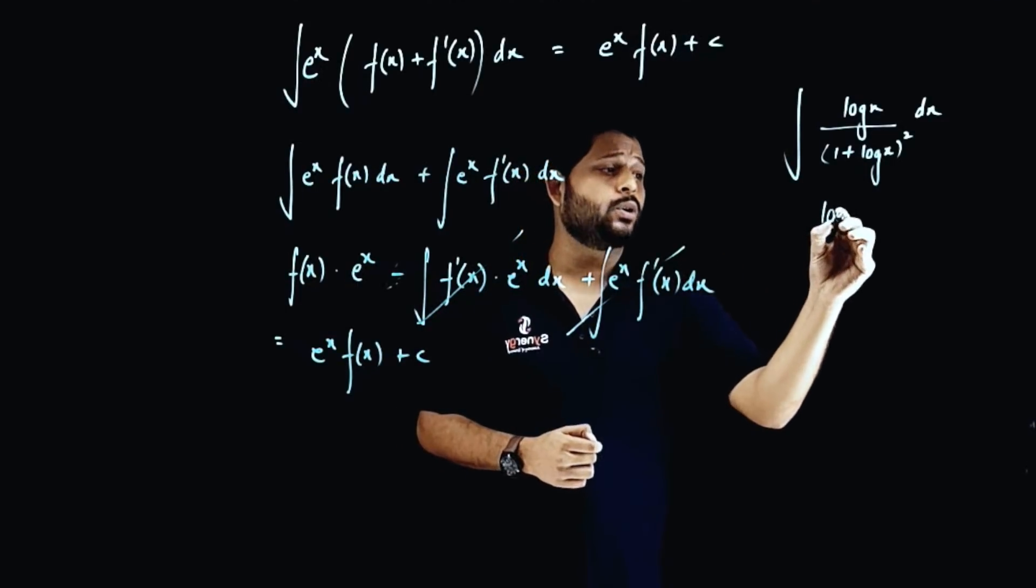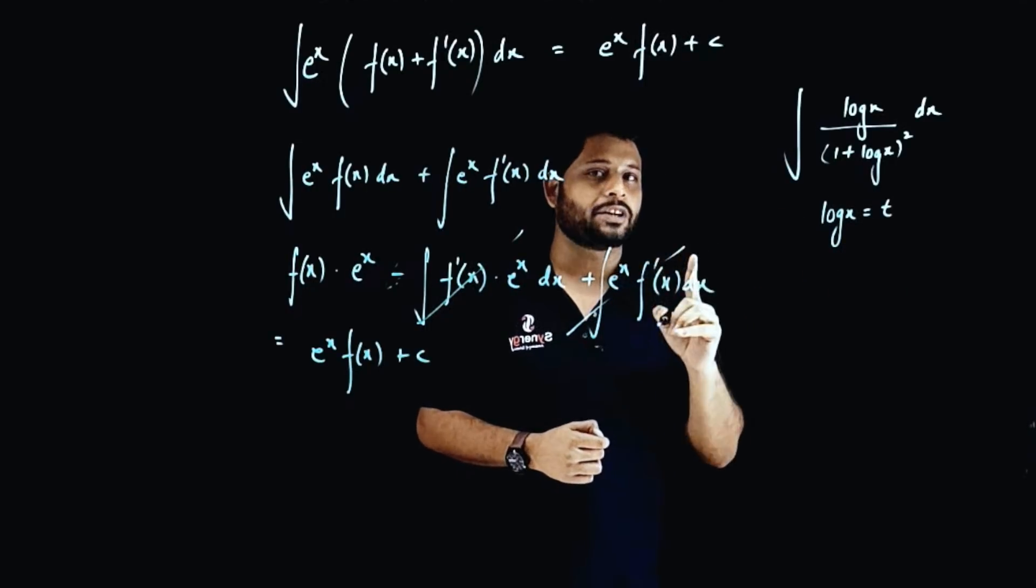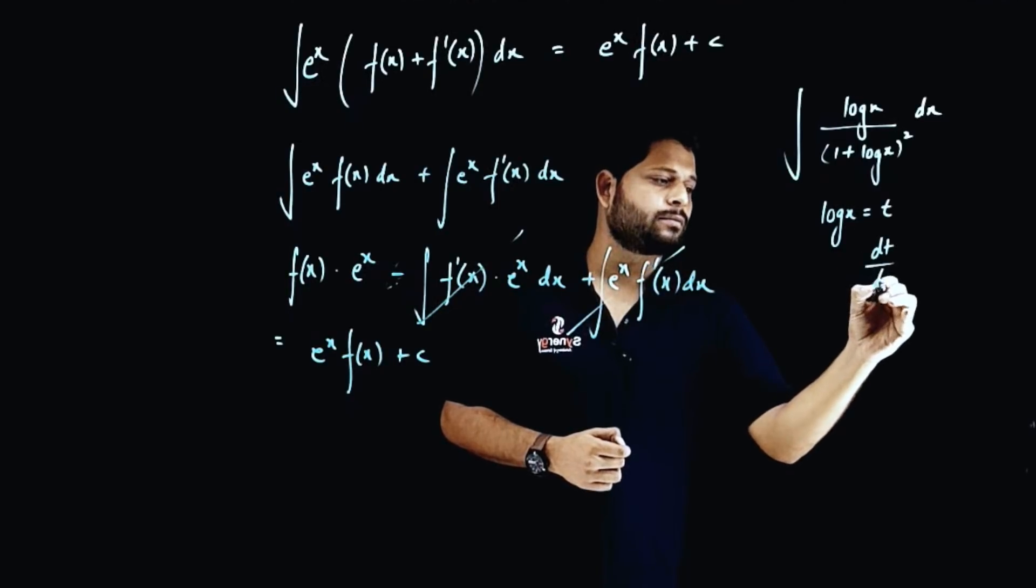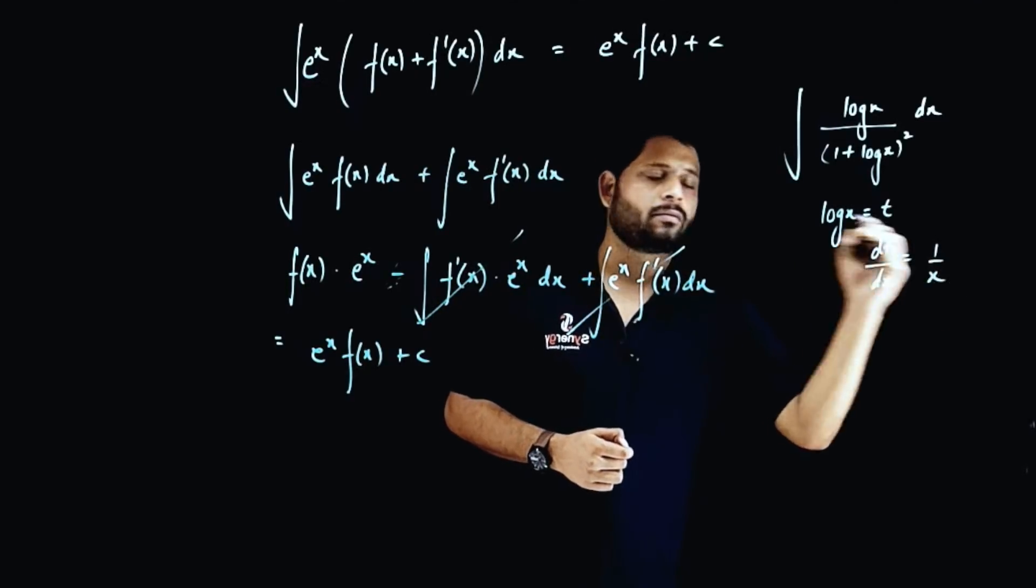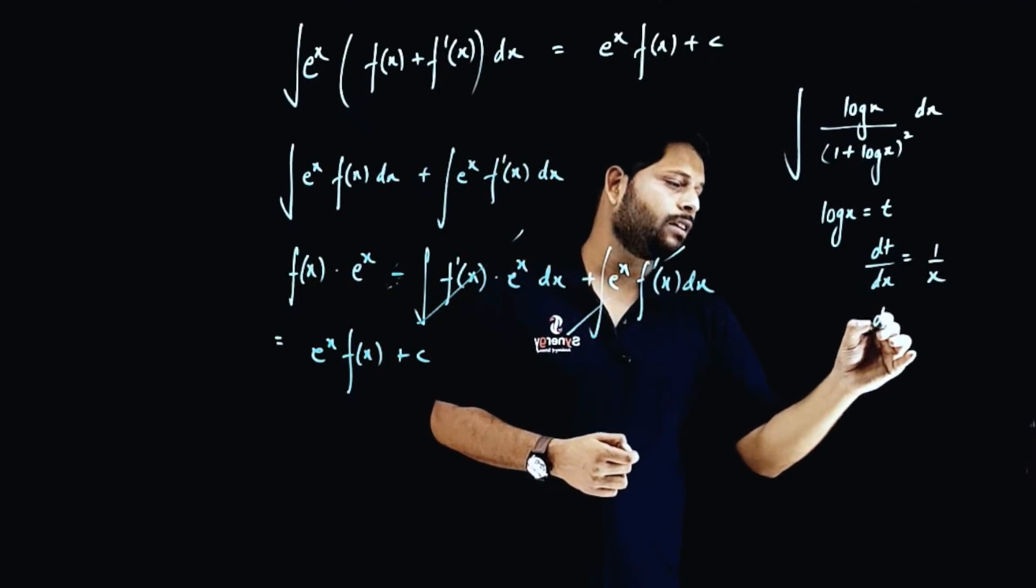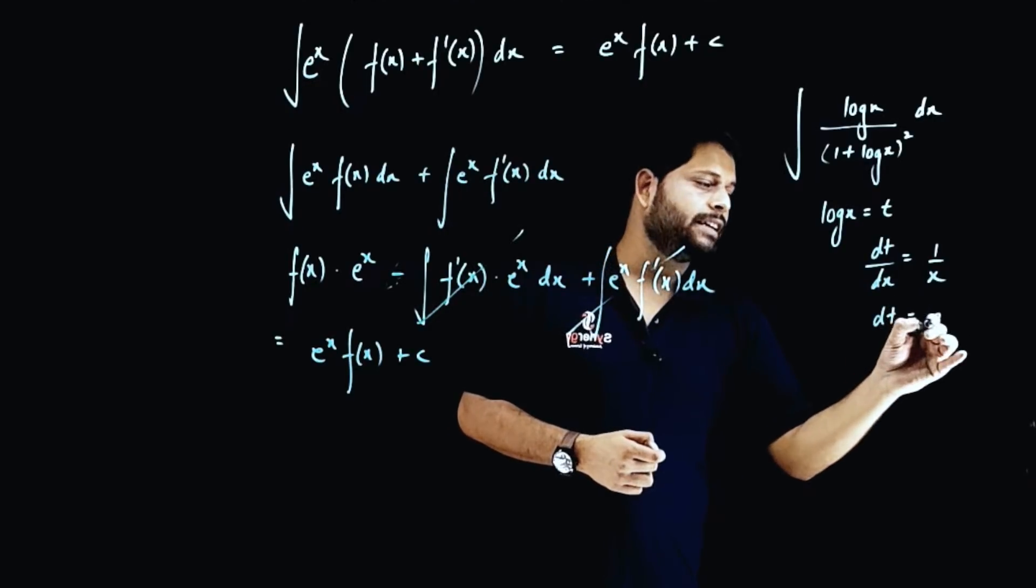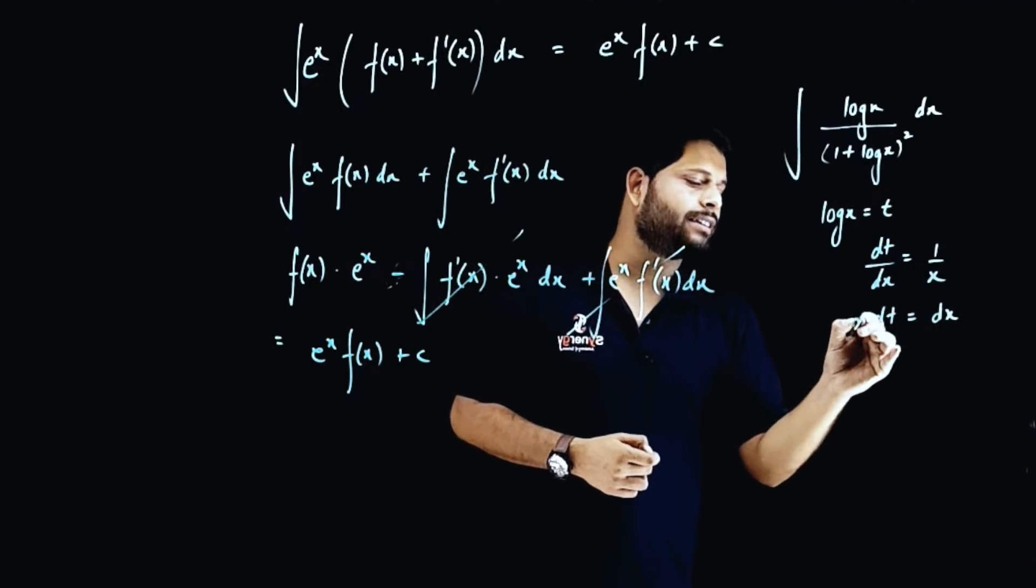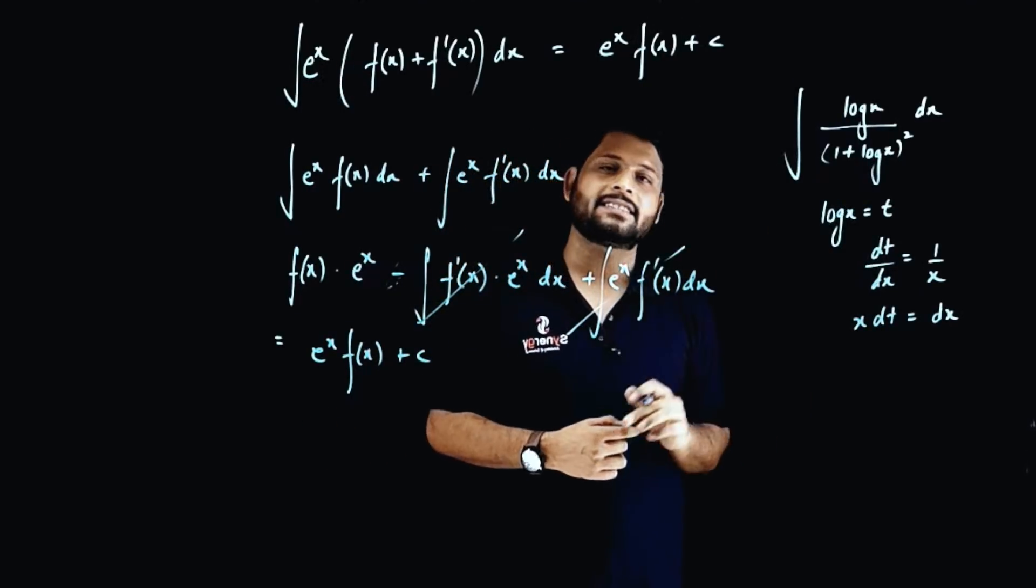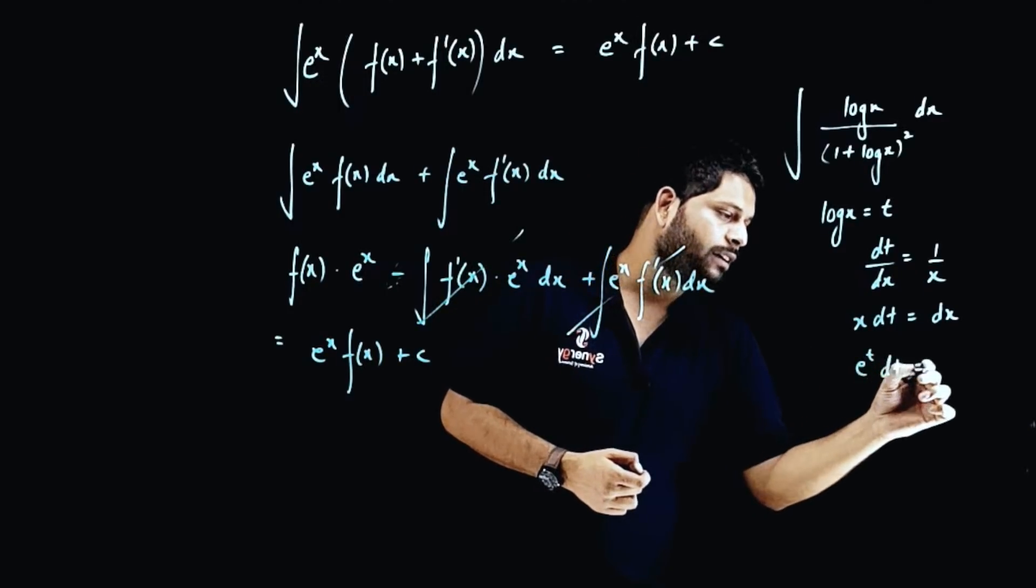So how to do such questions? First of all, as I have already told you in the previous videos, first think about substitution. In this case, dt will be equal to dx/x, or x·dt is equal to dx. Now x can be written as e^t, so e^t·dt is equal to dx.